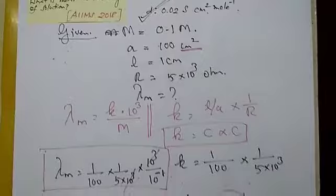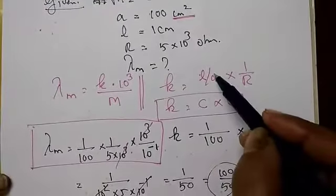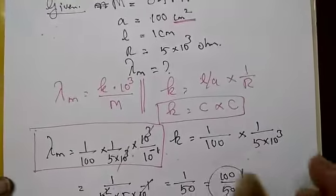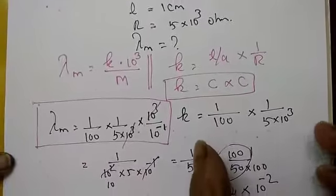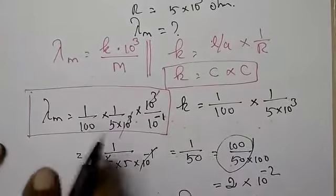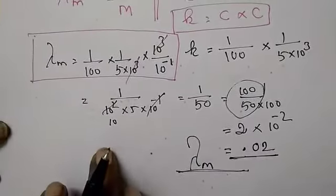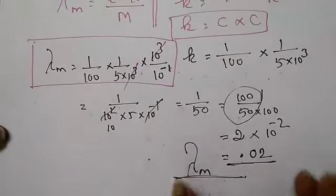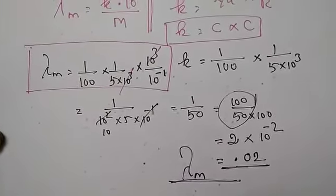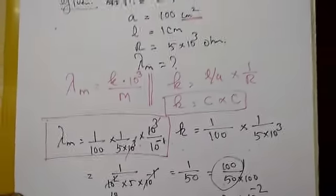Very simple question, children — merging of two formulas. First find kappa with the value of L/A and the resistance. As I told, don't simplify at that stage — keep it as it is and substitute into the second formula. At the final stage you simplify. If approximation is required you can go for it; here it is not required. Completely simplified simple calculation and we can get the answer. Prepare well, children. Thank you, students.